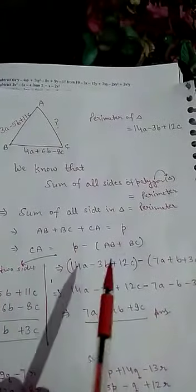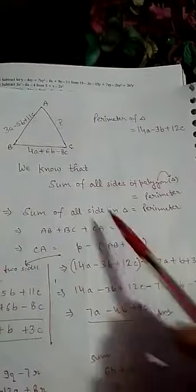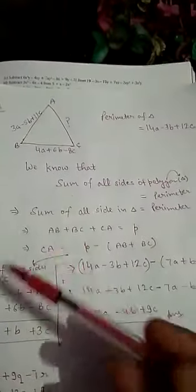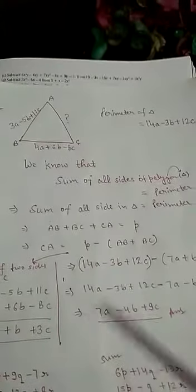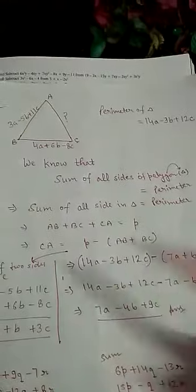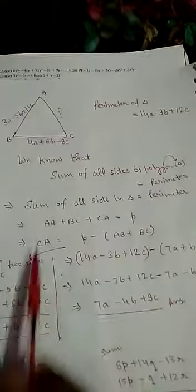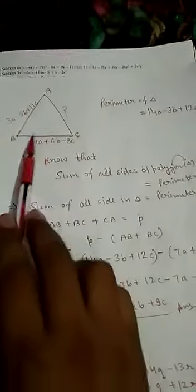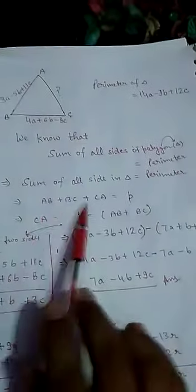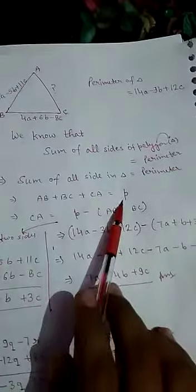Sum of all sides of a polygon - if we have any polygon, the sum of all its sides equals the perimeter. When we sum the three sides in this triangle, their sum equals the perimeter. When we subtract two sides from the perimeter, we get the third side.